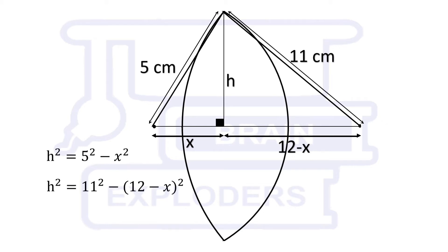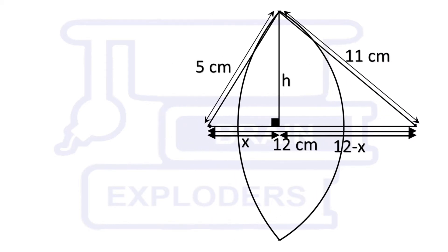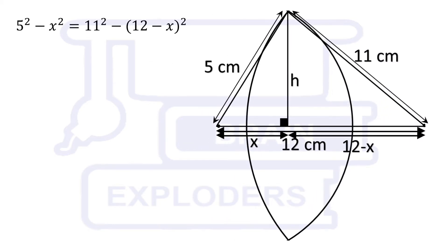Apply Pythagoras in both of these right angled triangles. We get h squared equals to 5 squared minus x squared equals to 11 squared minus (12-x) whole squared. On solving we get x equals to 2.